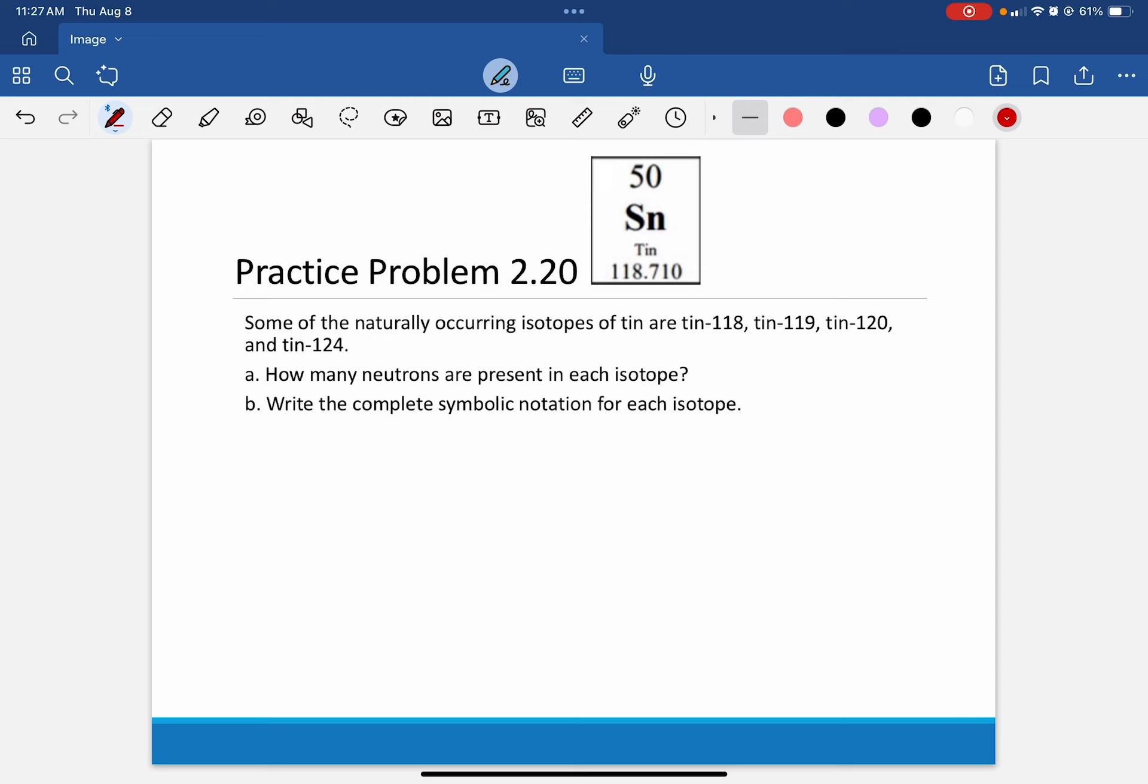Letter A asks how many neutrons are present, and letter B asks us to write the complete symbolic notation. So I'm going to go ahead and write our mass number formula, so mass number equals the number of protons plus the number of neutrons in the nucleus of an atom.